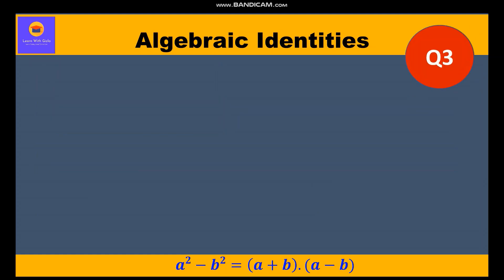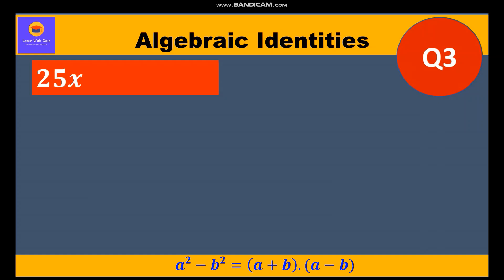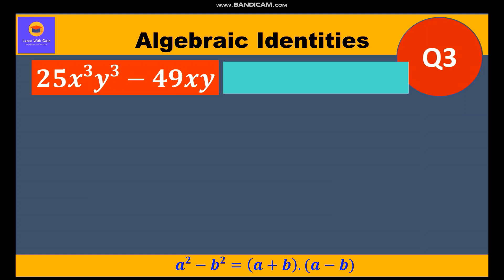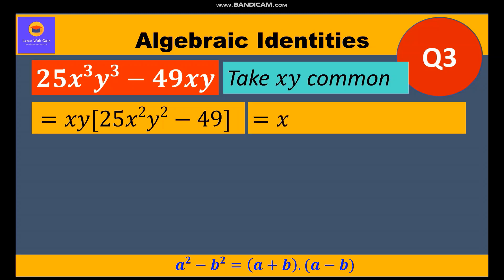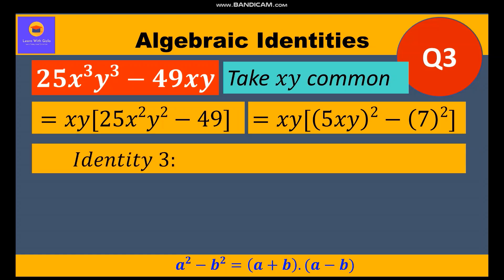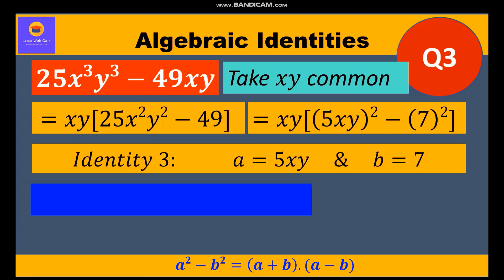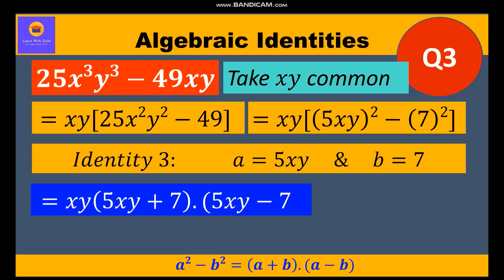Now let's move to the third question: 25x³y³ - 49xy. If you observe, xy is common, so taking xy common we are left with 25x²y² - 49 inside the bracket. Now 25x²y² = (5xy)² and 49 = (7)². This is Identity 3 where a = 5xy and b = 7. So the factors are xy(5xy + 7)(5xy - 7).